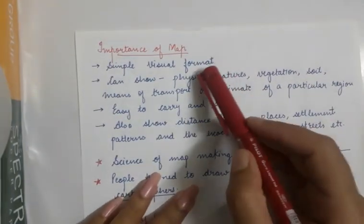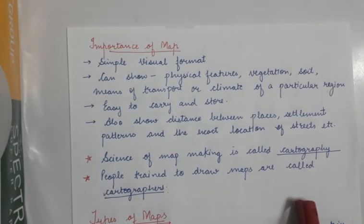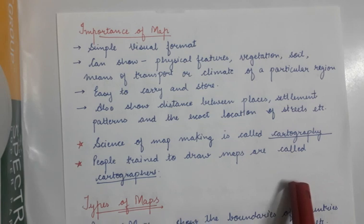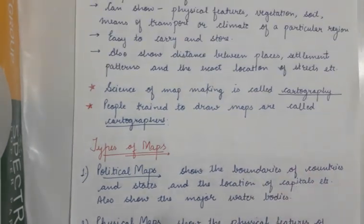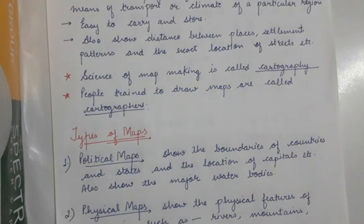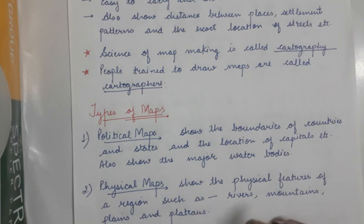It is a very accurate representation. The map is a simple visual format that tells us about physical features, vegetation, soil, continents, detailed features of the continents, their political features, their capitals, states, and important cities. All these things are shown in maps and we study them — we even buy a book named Atlas. The science of making maps is called cartography. The book containing different types of maps is known as Atlas. People who are trained to draw maps are known as cartographers.